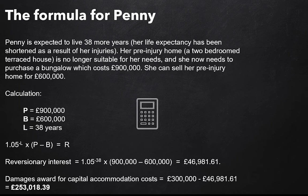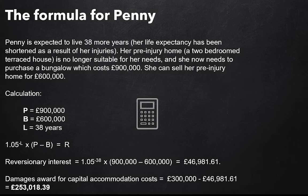We've applied that in Penny's case to see what it looks like with the numbers actually in there. Penny has a life expectancy of 38 more years — a simple number for the purposes of the calculation. Her pre-injury home isn't suitable for her needs. She's going to require a new home at a cost of £900,000, and she'll be able to sell her current home for £600,000. You'll see how we've put that into the formula: we get about £46,000 or almost £47,000 in reversionary interest. We take that away from the £300,000 difference, and so Penny would get £253,000. In practice, she'd use funds from other heads of loss to make up the difference needed to buy the house.